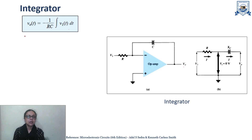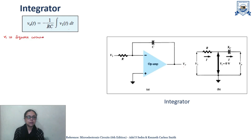Now let us take an example: if we apply V1 as a square wave, then what will be the output of this integrator? What output will we get at the output of this integrator circuit?